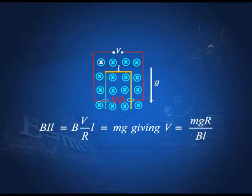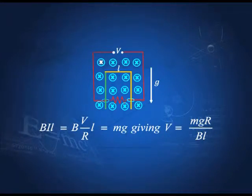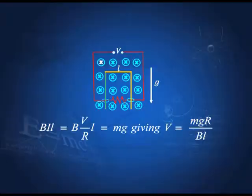By applying the right-hand screw rule with the magnetic field direction, we find the required current direction to produce an upward force. The force is BIL = B·(V/R)·L, and this must equal mg (the weight of the rod) to keep it stationary. From this, the required potential V = mgR/(BL). By passing this voltage in the correct direction, the movable rod can be held steady in a vertical frame.